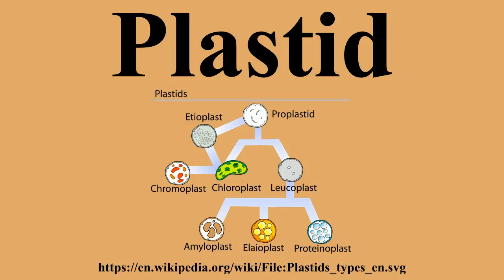Plastid DNA exists as large protein-DNA complexes associated with the inner envelope membrane, called plastid nucleoids. Each nucleoid particle may contain more than 10 copies of the plastid DNA. The proplastid contains a single nucleoid located in the center of the plastid. The developing plastid has many nucleoids localized at the periphery of the plastid, bound to the inner envelope membrane. During the development of proplastids to chloroplasts, and when plastids convert from one type to another, nucleoids change in morphology, size, and location within the organelle.